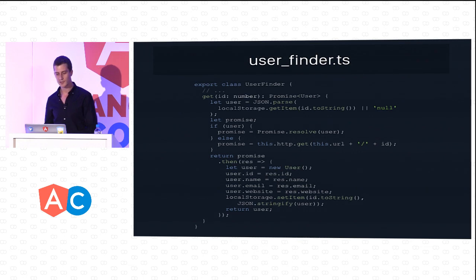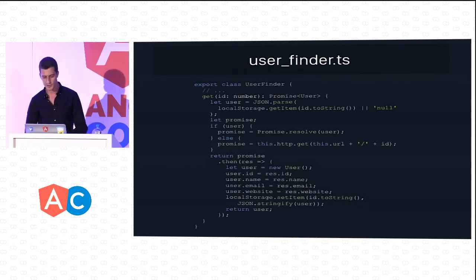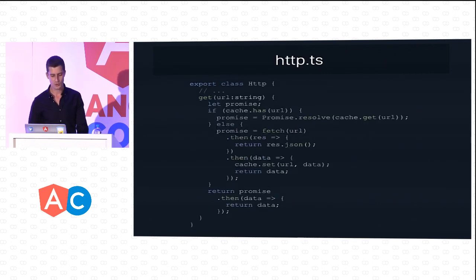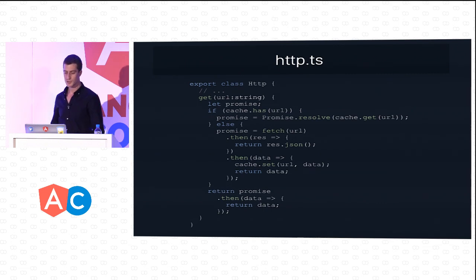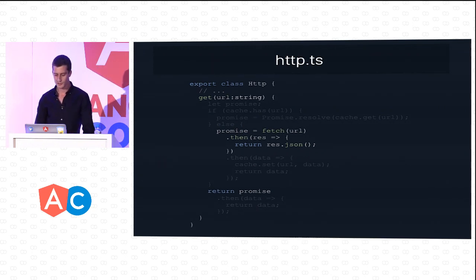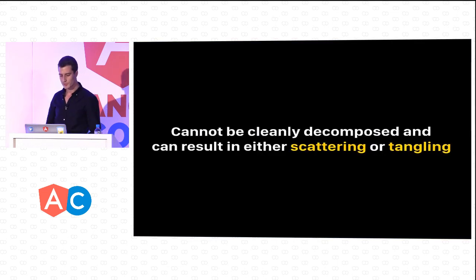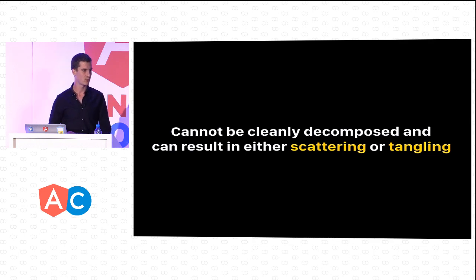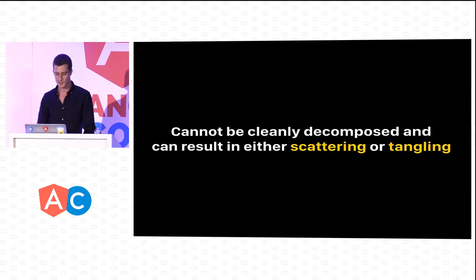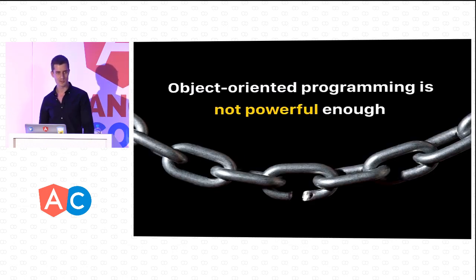The user finder should delegate HTTP GET requests to the HTTP service and map the response to our user representation — that is its core logic. Everything else encapsulates caching logic. Similarly, the HTTP service is supposed to delegate calls to the HTML5 Fetch API, but more than 50–60% of the logic is about caching. The problem with cross-cutting concerns is they cannot be cleanly decomposed, resulting in scattering or tangling of the codebase. Caching isn't the only problem — we also have logging, authorization, transaction management, and so on. Object-oriented programming simply isn't powerful enough to manage them cleanly.